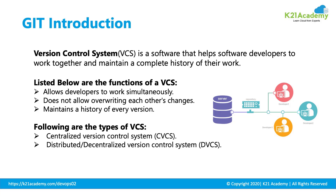The functions of a version control system are: one, it allows developers to work simultaneously; two, it does not allow overwriting each other's changes. For example, if there are two developers, A and B, both working on the same code — if both are making changes on line number 5 — in a general scenario it would overwrite. But with Git, it does not allow overwriting; one developer must check in first before the other can save. It also maintains a history of every version of the file.